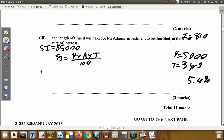Interest of $5,000 equals the principal investment of $5,000 multiplied by the rate of interest 5.4 multiplied by the time we don't know, that's what we're trying to find. So I'll write T for time, divided by 100.